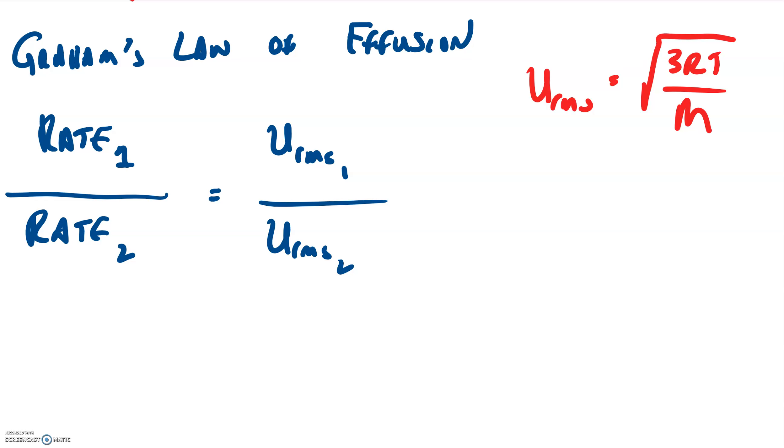And so if we plug that in, here's what we have: square root of 3RT over the mass in kilograms of gas 1, divided by the square root of 3RT divided by the mass of gas 2.